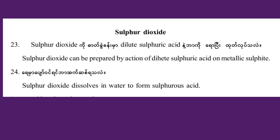Sulfur dioxide can be prepared by the action of dilute sulfuric acid on metallic sulfide. Sulfur dioxide dissolves in water to form sulfurous acid.